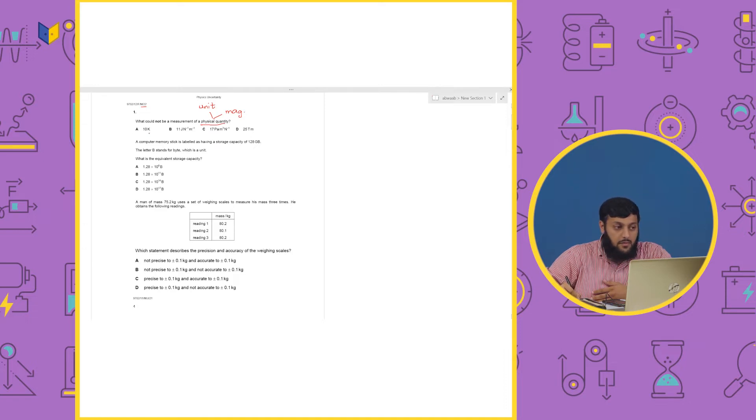So, A is 10 Kelvin. Kelvin is basically temperature unit. That means 10 Kelvin is the unit. So, physical quantity is a physical quantity.